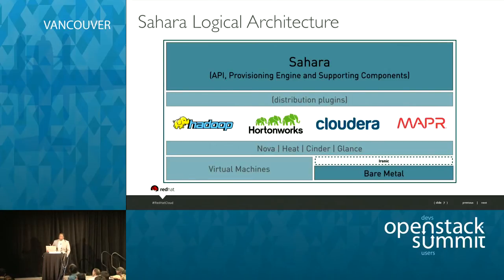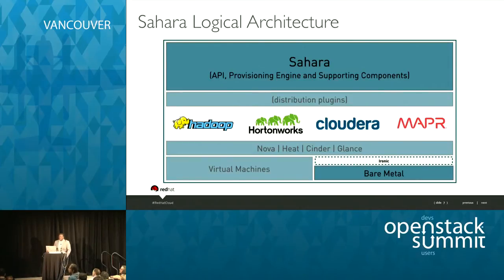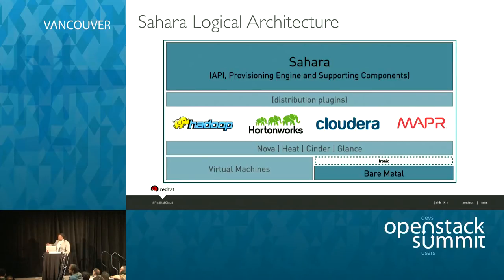We've got commercial plug-in support, so if you need a supported distribution of Hadoop, you can use HDP, which is the Hortonworks distribution, Cloudera, and we're working with MapR upstream as well. Essentially the way Sahara works is you pick one of these plug-ins you want to deploy, and it creates a Heat stack and deploys all of the services using Nova, Heat, Cinder, and Glance to stand that cluster up for you. Today we do that on virtual machines, but in the future some very early work is being done via Ironic and bare metal.